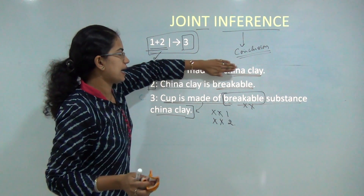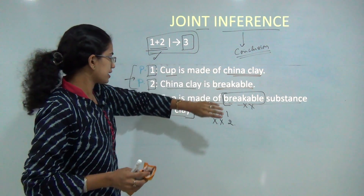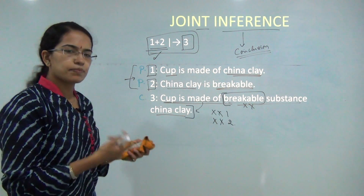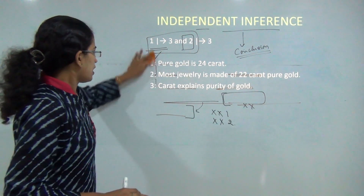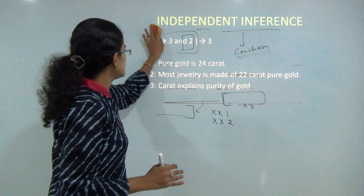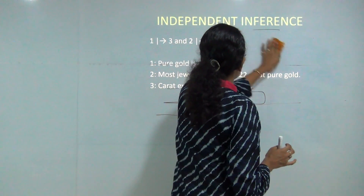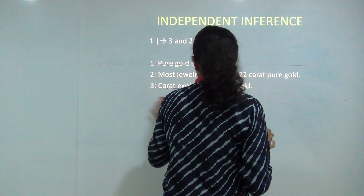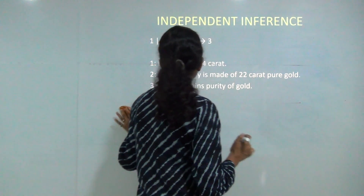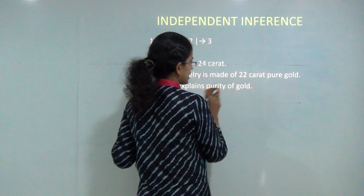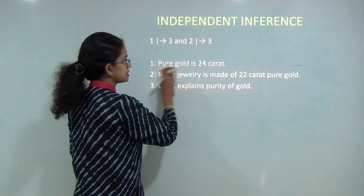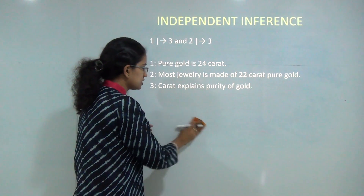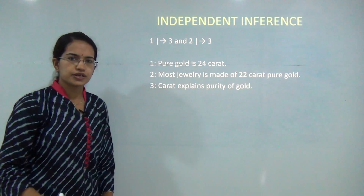By hiding either premise 1 or premise 2, I cannot reach conclusion 3 — that is an example of joint inference. Now let's work on a separate example. Again here, 1 and 2 are premises and 3 is the conclusion. My first premise states 'pure gold is 24 carat.' My second premise is 'most jewelry is made up of 22 carat pure gold.' And my conclusion says 'carat explains the purity of gold.'